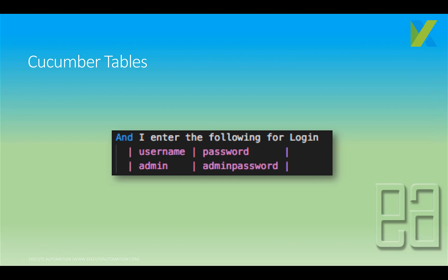As you know, Cucumber scenarios will have tables with something like username and password, and you can enter values from there. In our previous video we saw how to enter the username and password from a feature file to a step definition, but this time we're going to use a Cucumber table and see how we can pass parameters from a feature file to a step definition file.